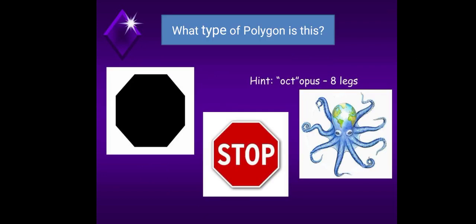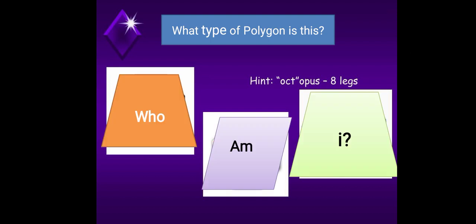For the application, what type of polygon is this? We have a hint. Oct. So how many tentacles an octopus has? Or legs, rather? Yes, it has eight legs. So having eight sides, it is called an octagon.